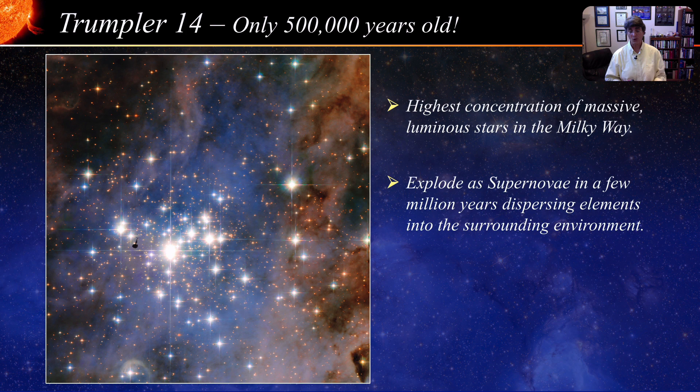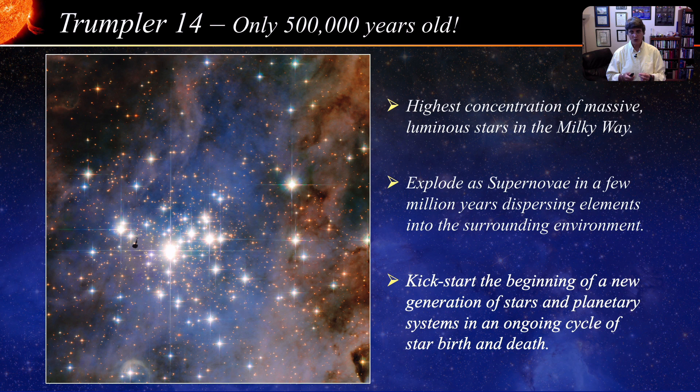The combination of supernova shockwaves and the outgoing flow of elements will kickstart the beginning of a new generation of metal-rich stars, together with their planetary systems, in an ongoing cycle of star birth and death. So the death of a star gives rise to the birth of next-generation stars.